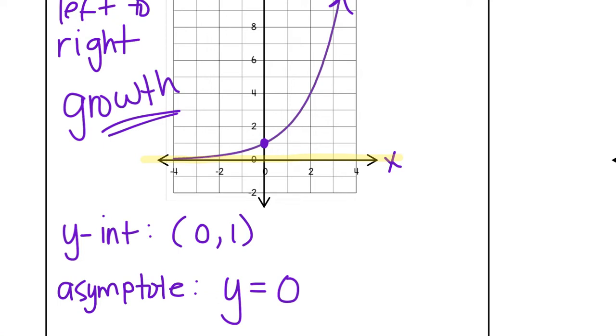The good thing about algebra one is that your asymptote is always going to be y equals zero. Once you move on to algebra two, you are going to have transformations and that asymptote will move different places. But for now, for algebra one, all you need to know is that it's always going to be y equals zero for your asymptote.